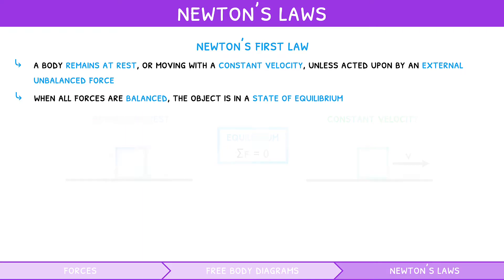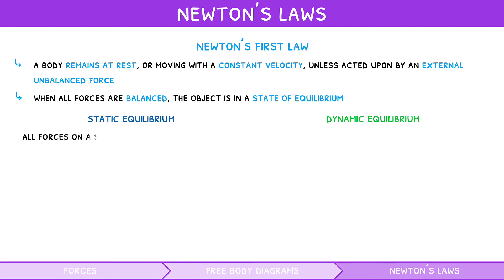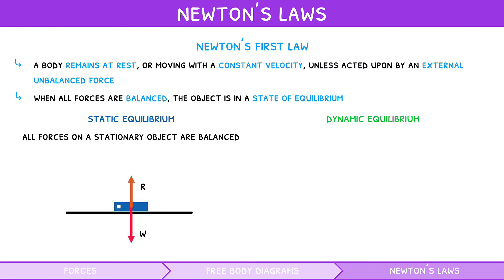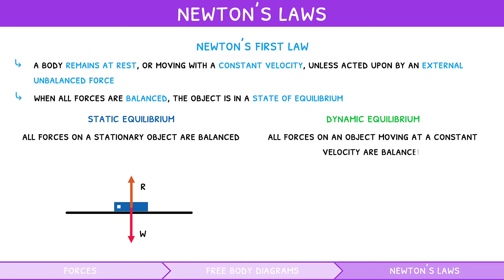There are two types of equilibrium: static equilibrium and dynamic equilibrium. Static is a state of equilibrium wherein all forces on a stationary object are balanced — for example, a book lying on a table. Dynamic is a state of equilibrium wherein all forces on an object moving at a constant velocity are balanced — for example, a skydiver at terminal velocity.